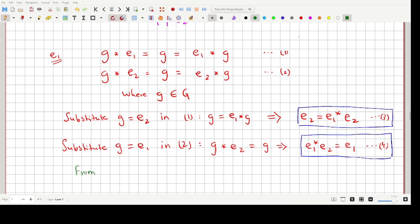from equation 3 and 4, E1 has to be equal to E2. Therefore, the identity of the group G is unique, and that completes this very short and sweet proof about the uniqueness of the identity element. Thank you for watching.